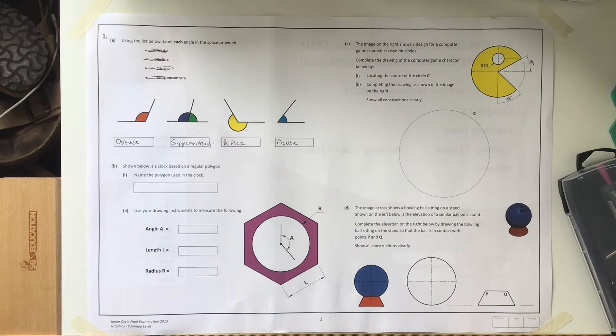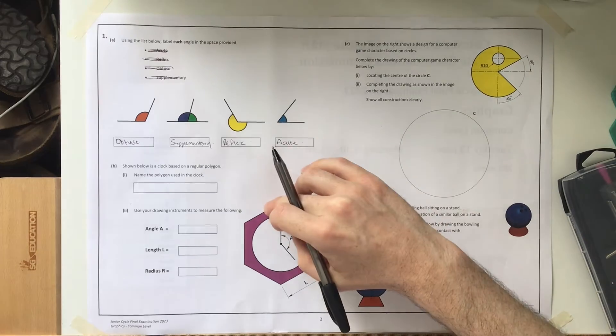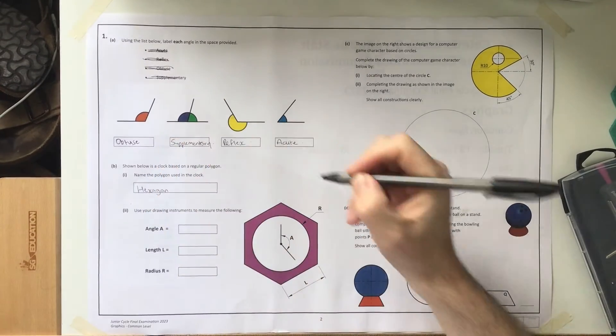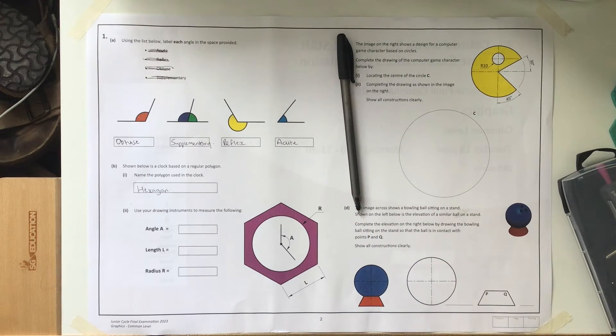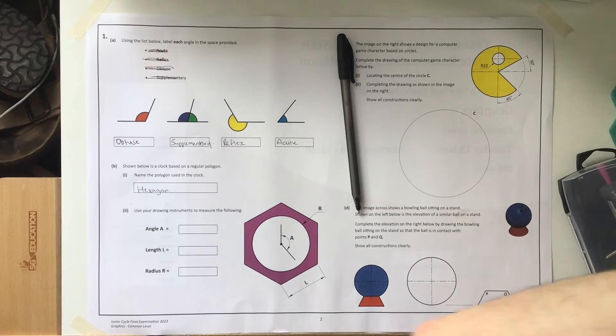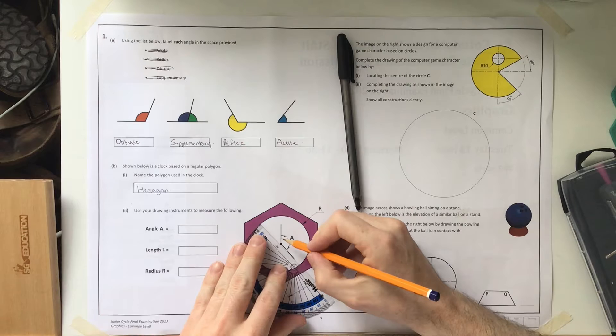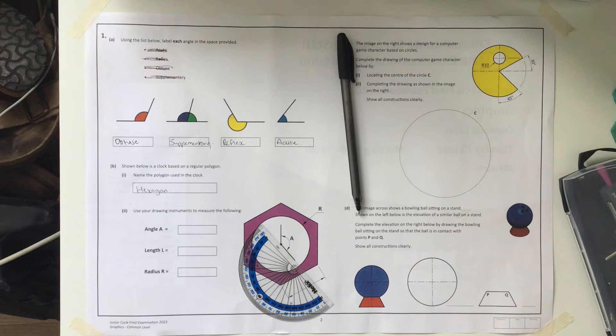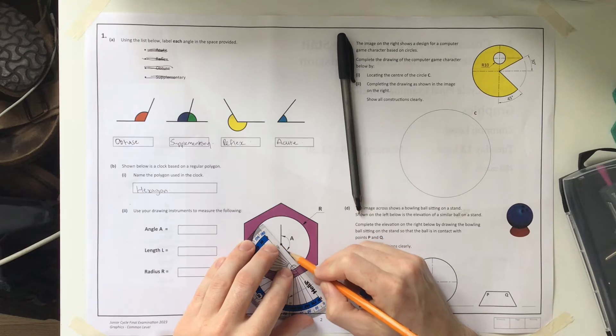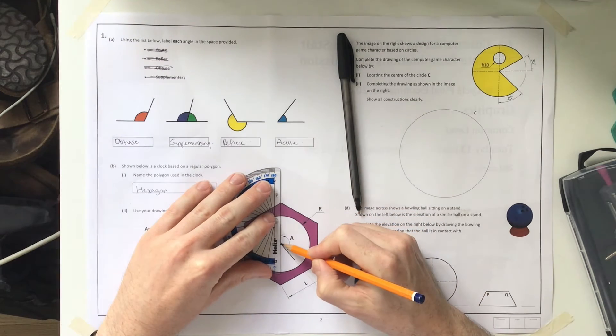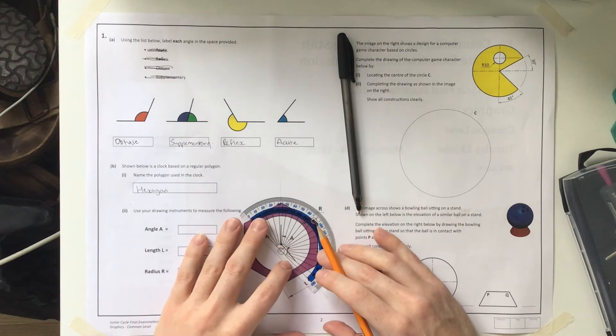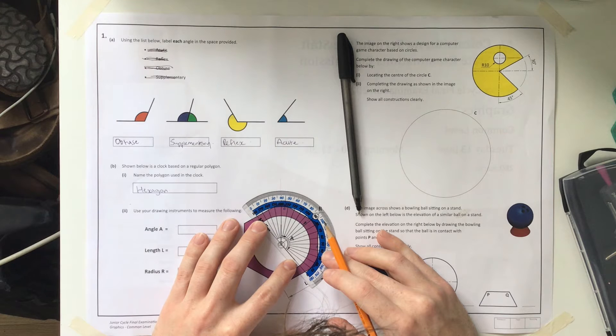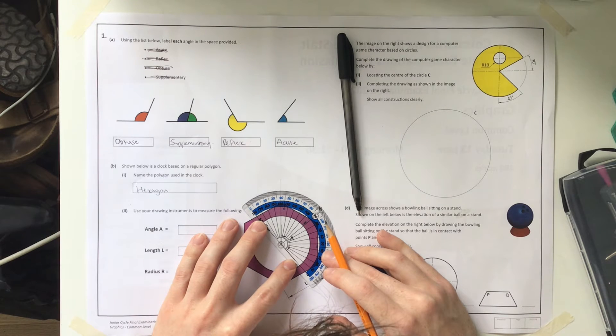The next question asks us to name the polygon shown. Counting the sides - six sides - that's a hexagon. Next it asks us to use drawing equipment to measure angle A, length L, and the radius. I extend the angle to make it easier to measure. Line up the center with zero on the right hand side of the protractor.